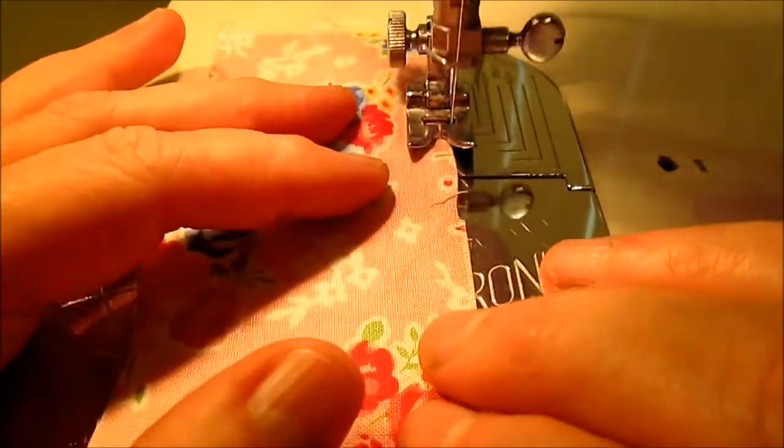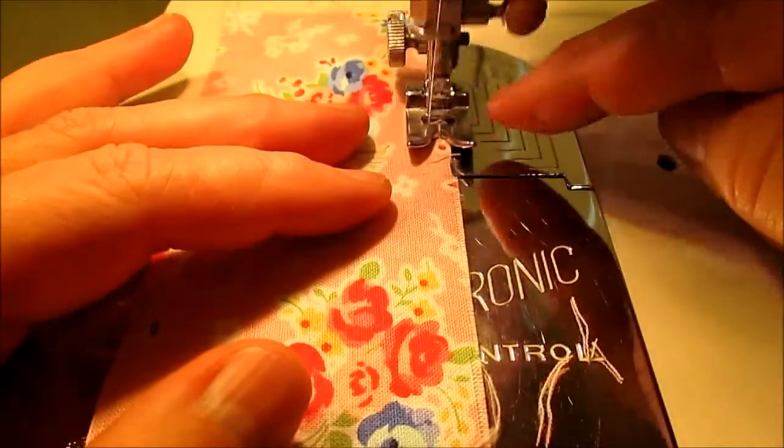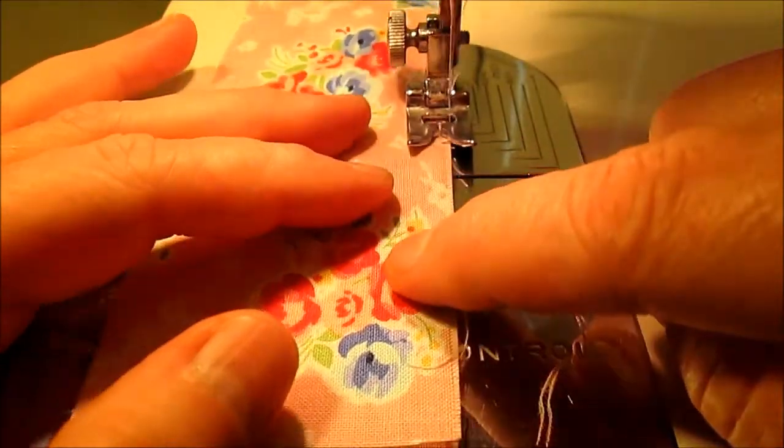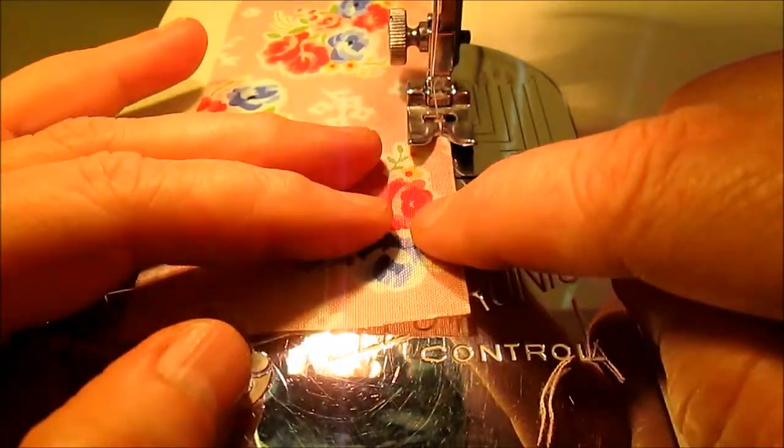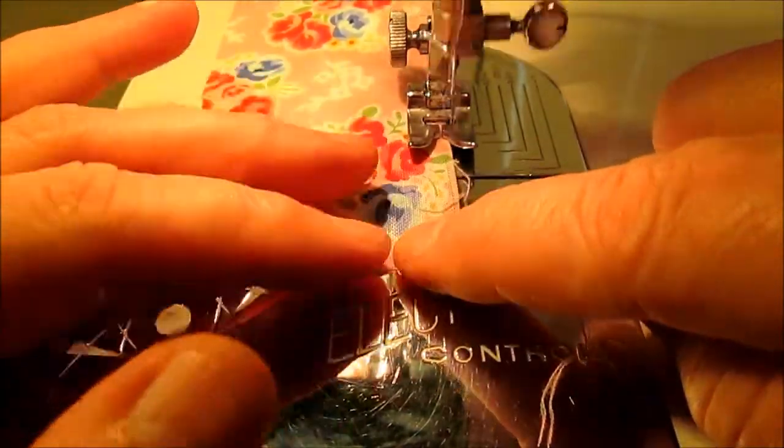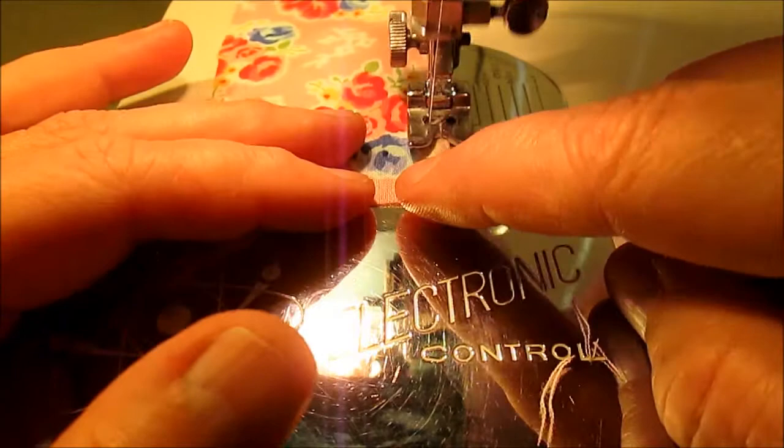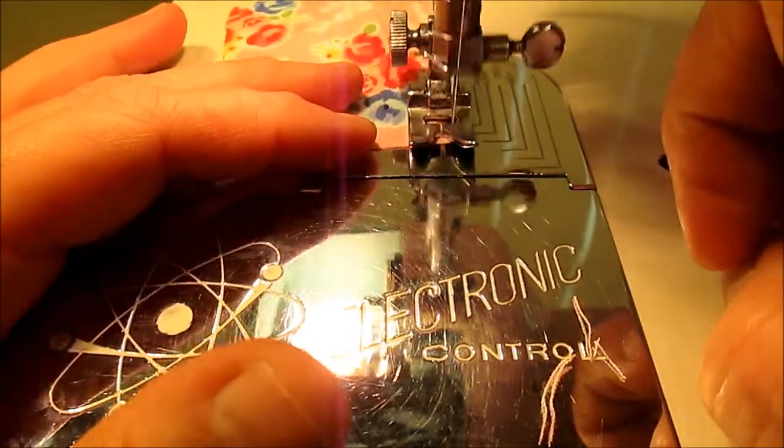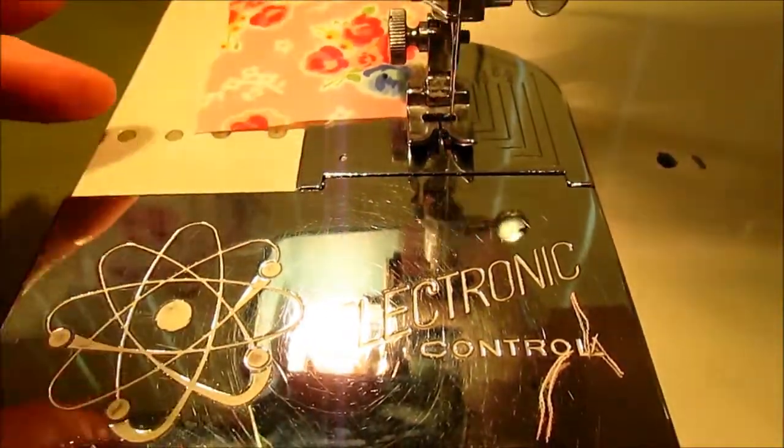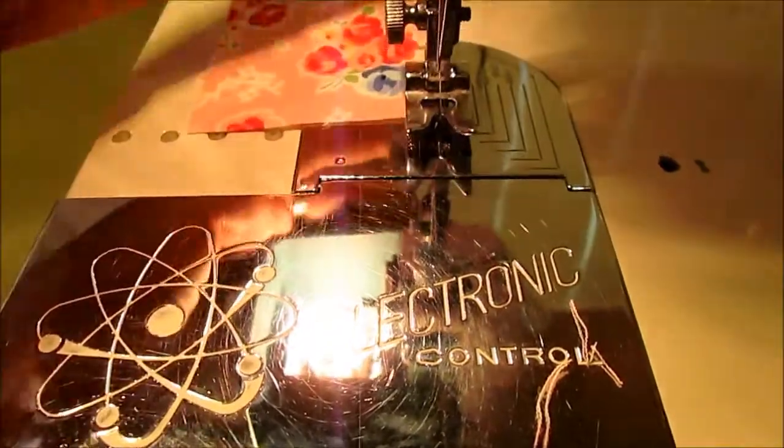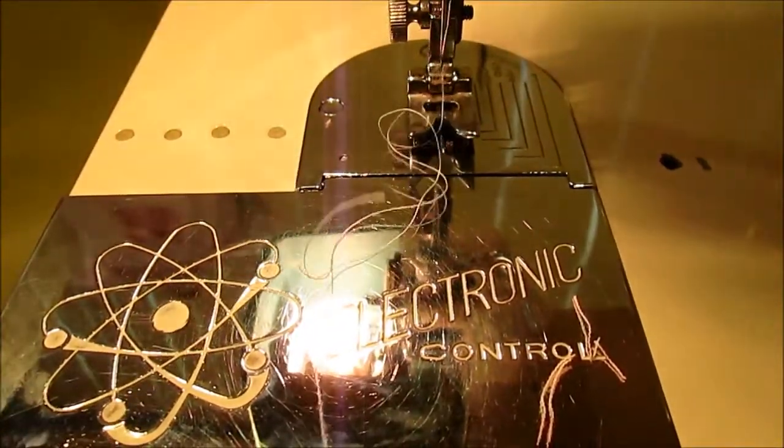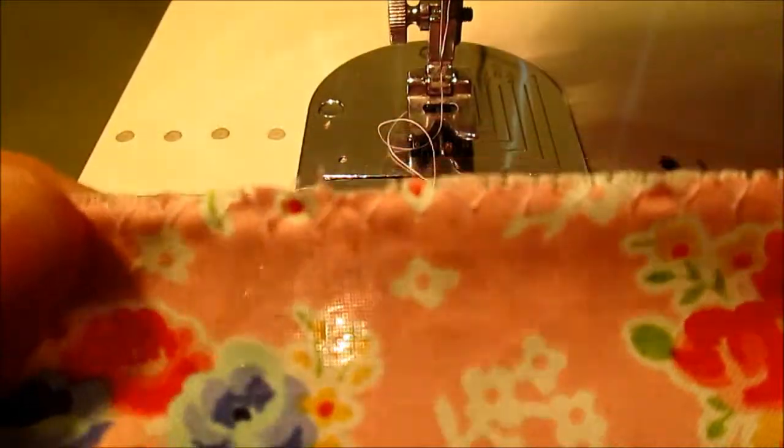That's kind of the way a serger works—it loops the thread over the edge of your fabric. This is called overcasting the edge. All right, so now I have overcast the edge of this fabric.